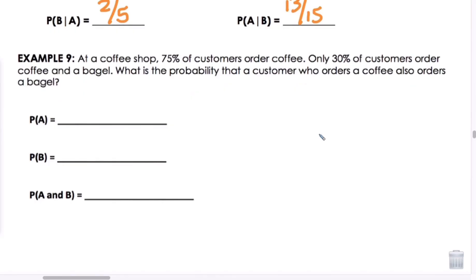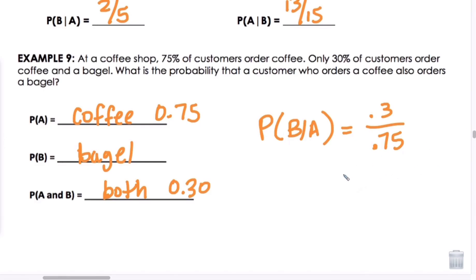And again, we want to put this in some real-world context. So example 9, at a coffee shop, 75% of customers order coffee. Only 30% of customers order coffee and a bagel. What is the probability that a customer who orders a coffee also orders a bagel? We know P of A is going to be coffee. We said that's 75%, so we're going to put 0.75. And probability of B is going to be our bagel. And of both of them, B of A and B, so this is our both, we can say we know that's 0.30. So if I want to find P of B if A, I'm going to have my 0.3 divided by my 0.75 using our formula. If you go back to the first page, which will give us 40% chance.